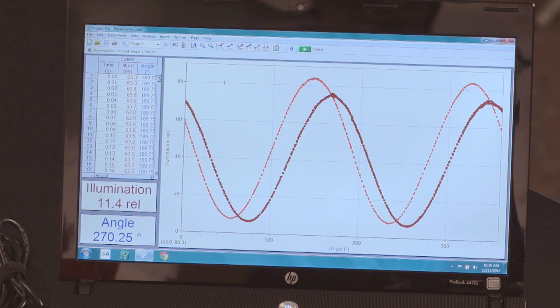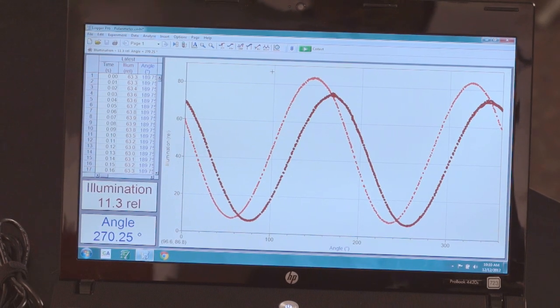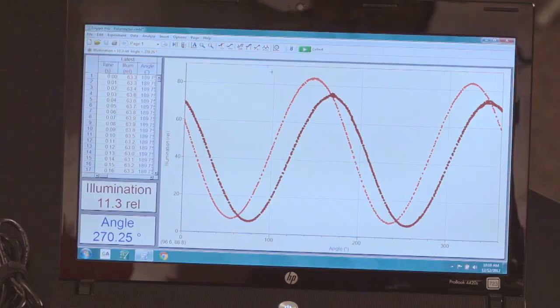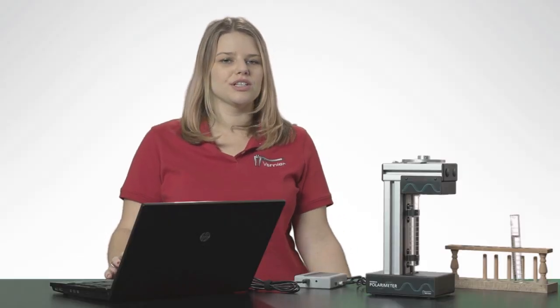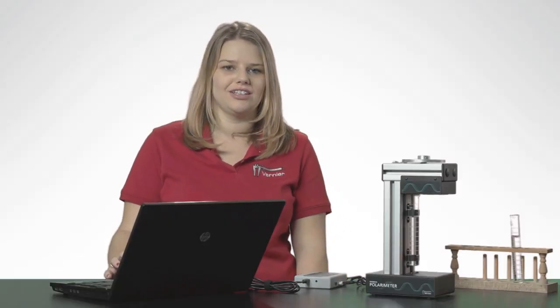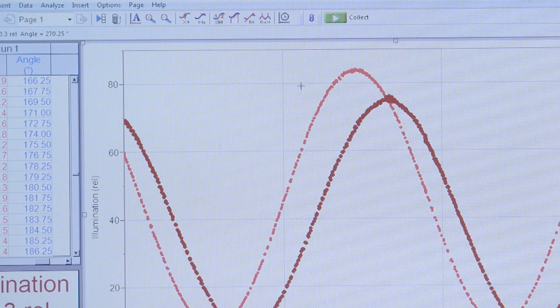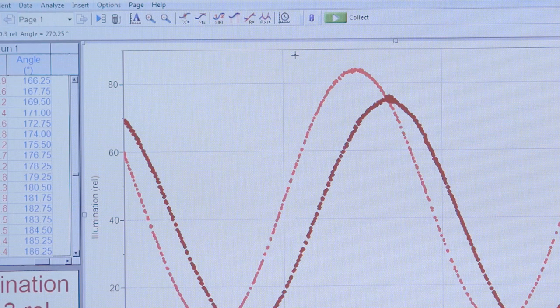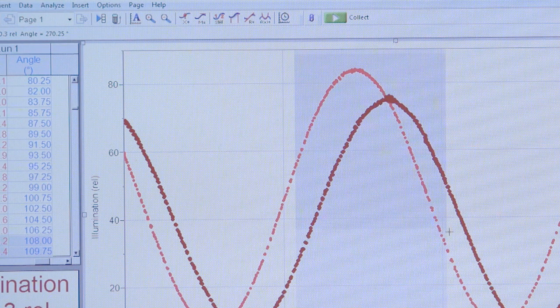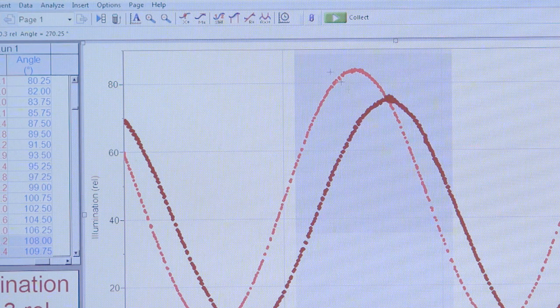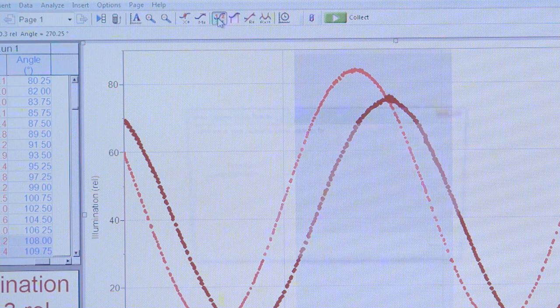This data can be analyzed quantitatively several different ways in Logger Pro. The quickest and simplest way to quantitatively analyze these results is to use the statistics feature. To do that, I select the first peak after angle zero and tap on the statistics button.